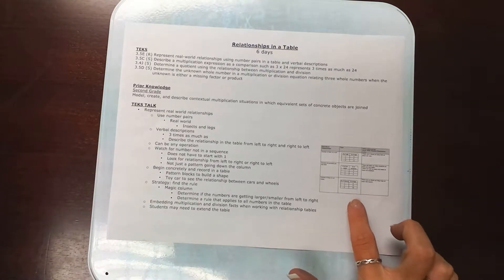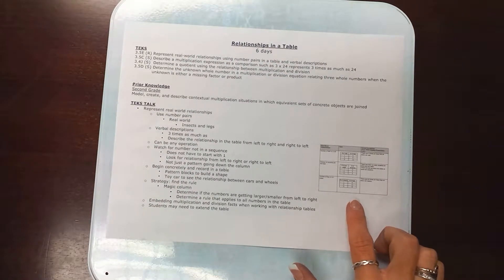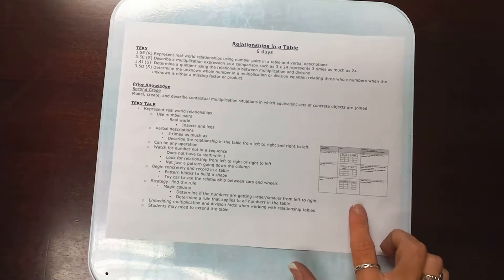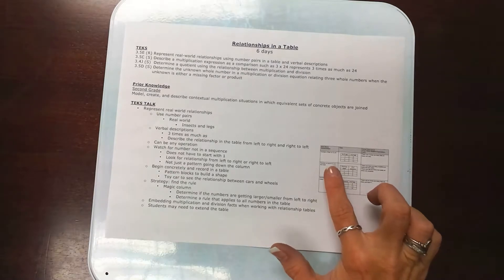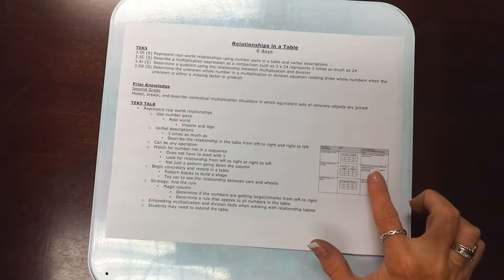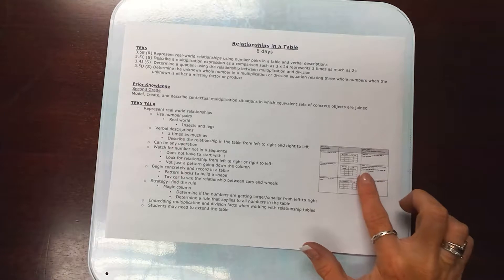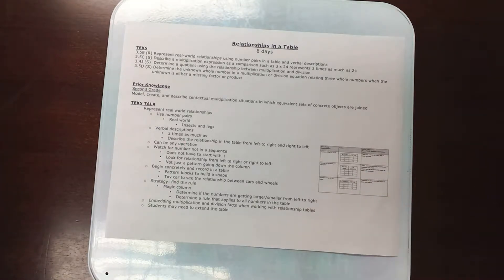So if you look here on your instructional talk page you can see a couple of tables that have already been done for you. This is the number of feet in a cat. There are four times as many feet as there are cats. That's the whole verbal description piece we're talking about.